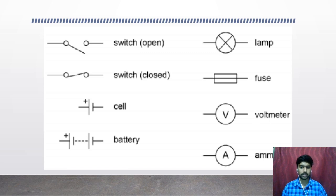The next two are the circuit symbols of cell and battery. In the cell the longer line will denote the positive terminal and the smaller line denotes the negative terminal. If more than one cell are connected in series we call it a battery.